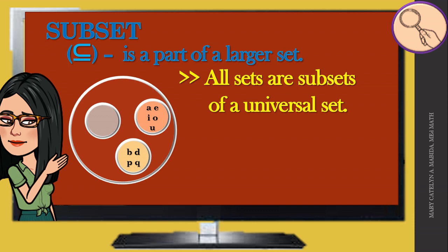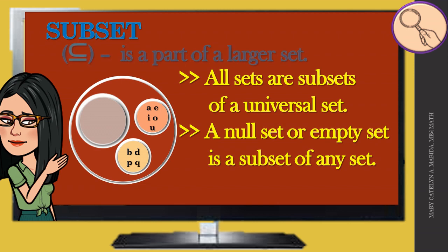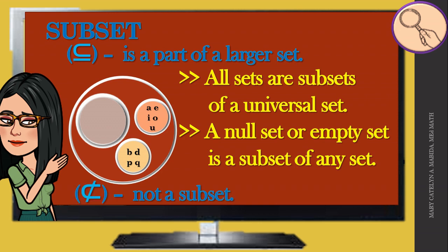A subset contains some of the elements in the universal set — all elements in your subset are in your universal set. A subset is a part of a larger set, denoted by its own symbol. Every universal set has sets inside it, and all of these sets are subsets of the universal set. A null set, or empty set, is a subset of any given set. The symbol for 'not a subset' is also introduced here.